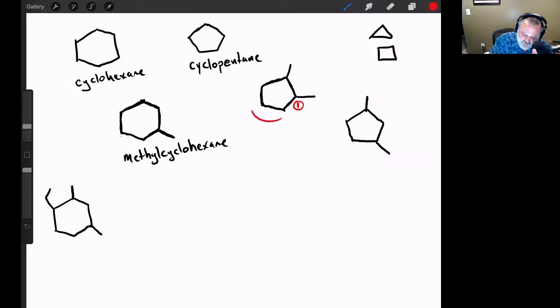But here's the deal. We don't go around this way to call this carbon number five. What we do is we number in the direction that gets us to the next substituent as fast as possible. We want to have the lowest total number of values for substituent locations.